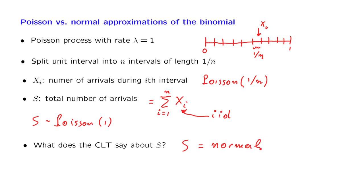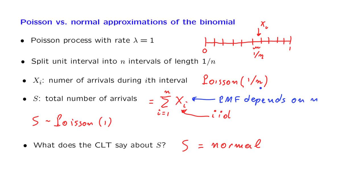What is the catch? The catch is the following. The central limit theorem applies to a situation where we fix a certain probability distribution — the distribution of the Xi's — and it tells us that as we add more and more of these Xi's, asymptotically we obtain a distribution that's well approximated by a normal. On the other hand, what we have here is actually different: the Xi's do not have a fixed distribution. Rather, the distribution of Xi depends on n. If we change n so that we're adding more random variables, we're adding random variables that are now coming from a different distribution. This is not a situation to which the central limit theorem applies, and therefore this conclusion is not justified.